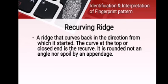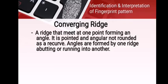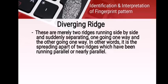First is the recurving ridge — a ridge that curves back in the direction from which it started. The curve at the top or closed end is the recurve; it is rounded, not an angle, nor spoiled by an appendage. Next, converging ridge: a ridge that meets at one point forming an angle — it is pointed and angular, not rounded like a recurve. Angles are formed by one ridge abutting or running into another. Diverging ridge: two ridges running side by side that suddenly separate, one going one way and the other going another — it is the spreading apart of two ridges which have been running parallel or nearly parallel.